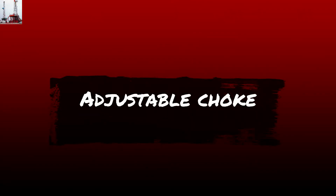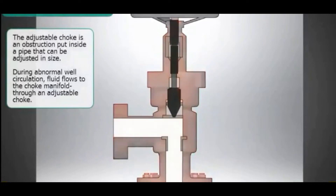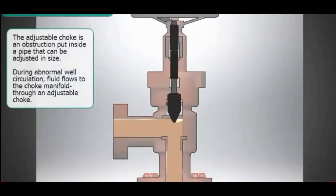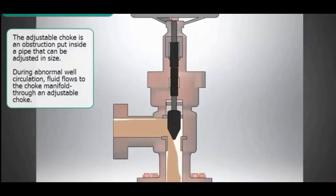The adjustable choke is an obstruction put inside a pipe that can be adjusted in size. During abnormal well circulation, fluid flows to the choke manifold through an adjustable choke.